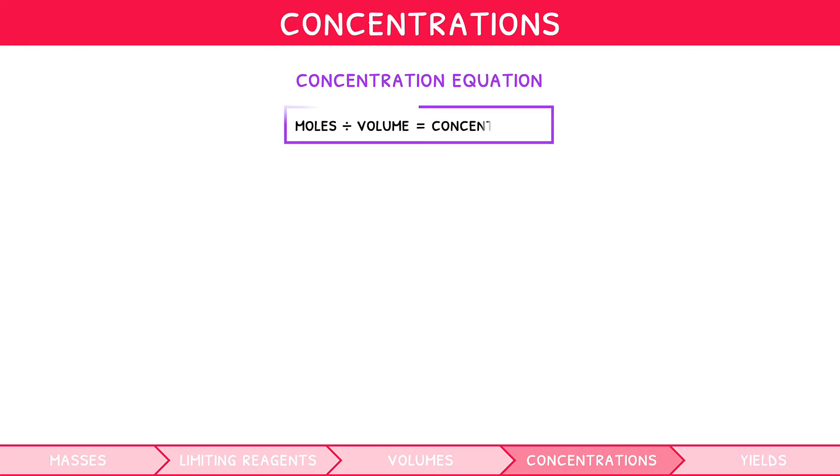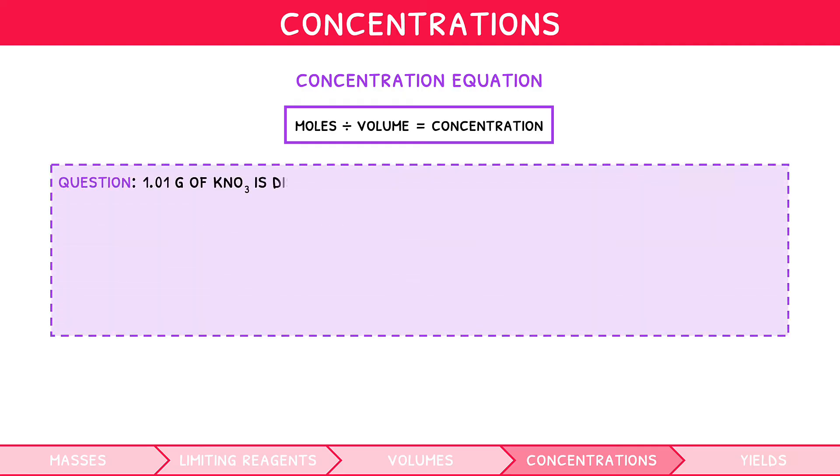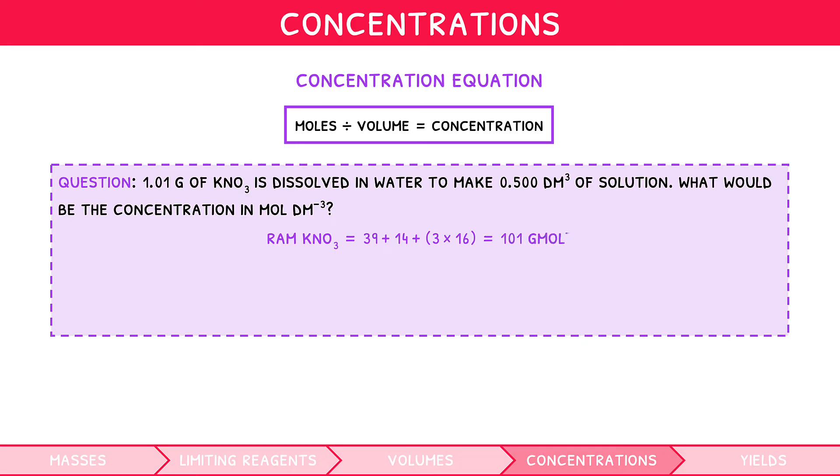Now that you have a basic understanding of how mass, RAM, moles and volumes relate to one another, we can have a look at concentration. The key formula you need to know was mentioned before. It is moles divided by volume is equal to concentration. Remember, volume must be in dm cubed to use this formula. Let's apply it in a question. 1.01 grams of potassium nitrate is dissolved in water to make 0.5 dm cubed of solution. What would be the concentration in mole per decimetres cubed? We start by calculating the moles of potassium nitrate using mass divided by RAM. Then, concentration equals moles divided by volume, which equals 0.02 moles per decimetres cubed. It is that easy.